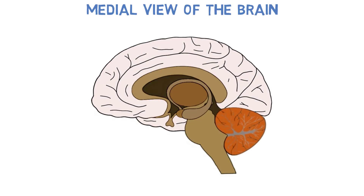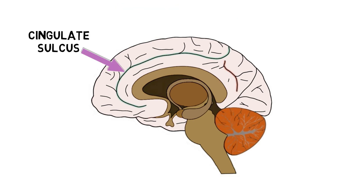Looking at a medial view of the brain, we can see a prominent sulcus called the cingulate sulcus, which traces a path around the more central structures of the brain and acts as a demarcation line for what is described in some texts as a fifth lobe of the brain, the limbic lobe. The limbic lobe is important in emotions, motivated behavior, and memory, and can be considered part of the larger limbic system, which includes structures such as the hippocampus, amygdala, and others.